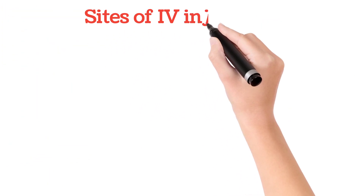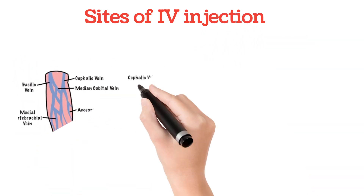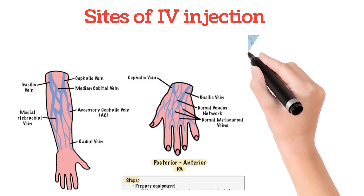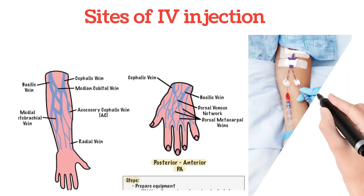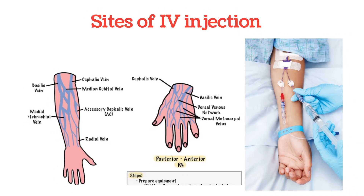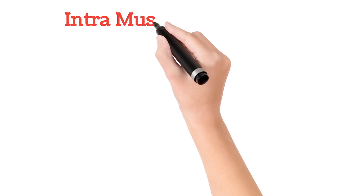Coming to the common sites, generally the IV injection is given on the back of the hands, front and back of the lower arm, and front elbow.